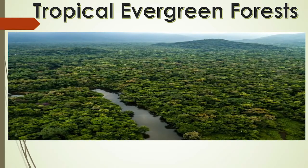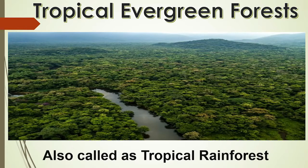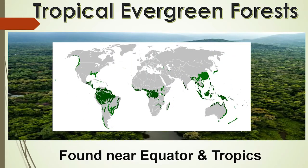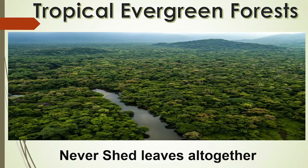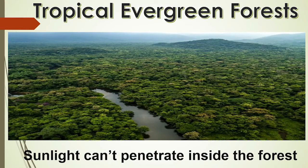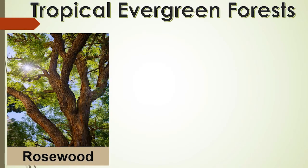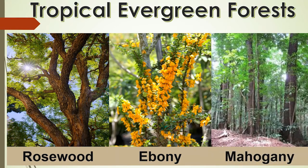First we will talk about tropical evergreen forests. These are also called tropical rainforests and are found in the regions near the equator and close to the tropics. These regions are hot and receive heavy rainfall throughout the year. Trees of these forests do not shed their leaves altogether, thus they are called evergreen. The thick canopies of the closely spaced trees do not allow sunlight to penetrate inside the forest even in daytime.